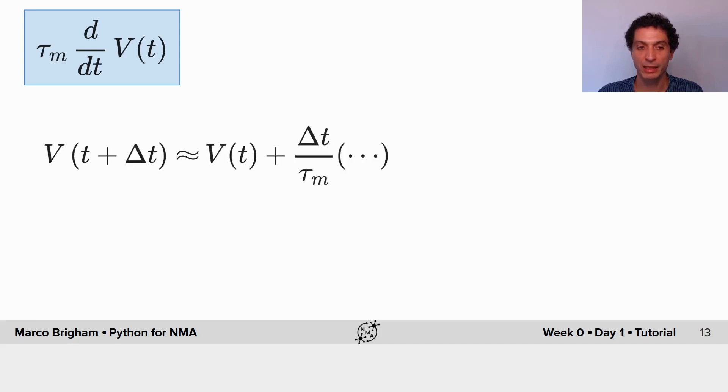And basically the exercise is for you to write the voltage at time t plus a small increment delta t in terms of the voltage at time t and the remainder terms. So grab a pencil, solve the equation, and you're ready to go.